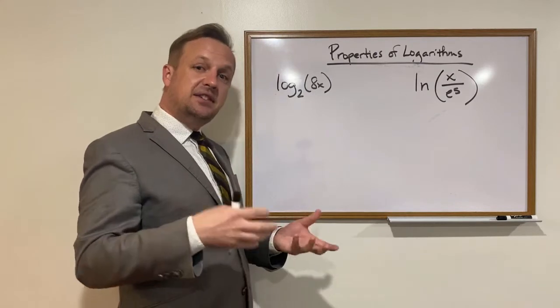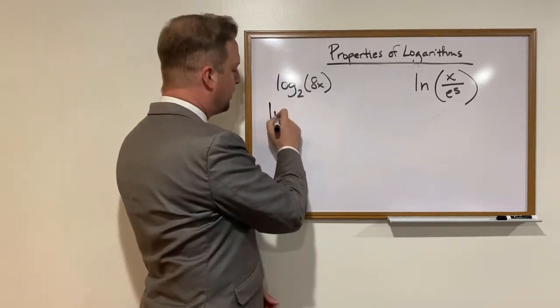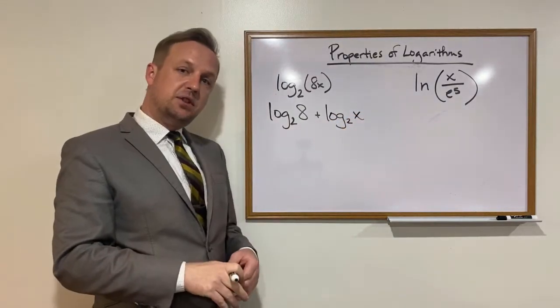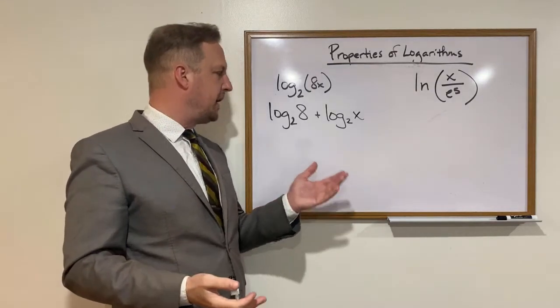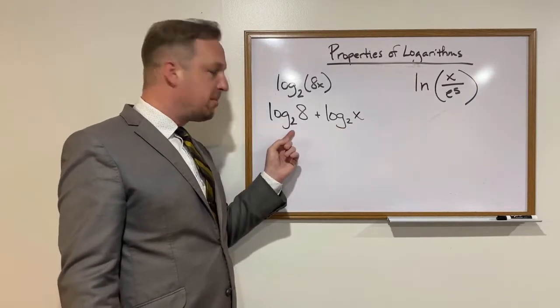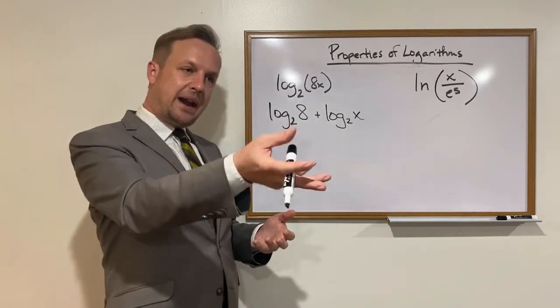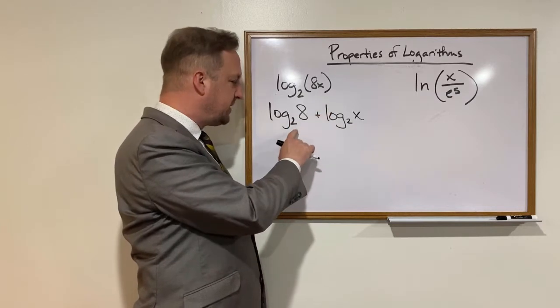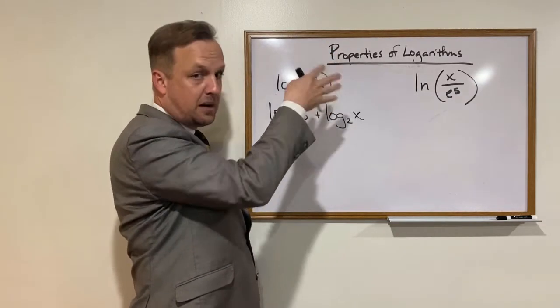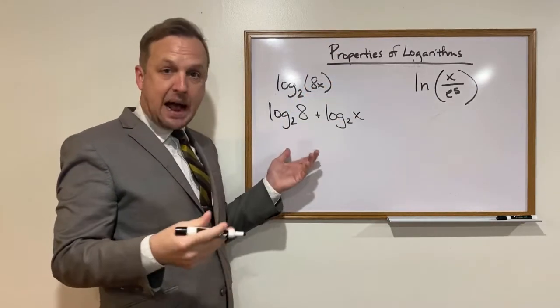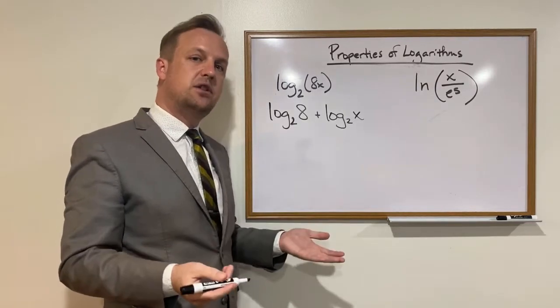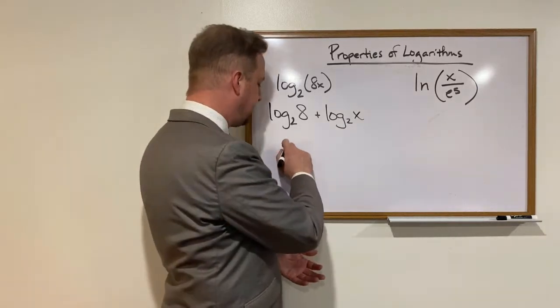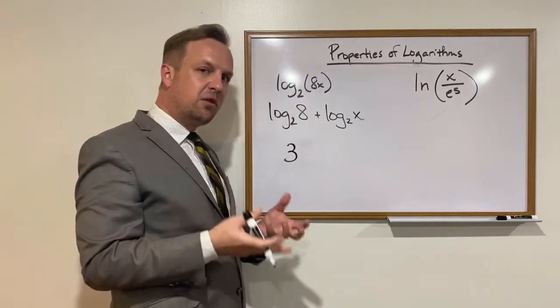So if we take a look at this first one, we've got log base 2 of 8x. And remember, that's essentially just 8 times x. So using the product rule, we can actually break that apart into log base 2 of 8 plus log base 2 of x. Remember, we can't really do anything with this because of this variable. But if you remember what a logarithm really means, a base raised to a power equals a value, then we can work with this. So the log base 2 of 8 basically means that this base of 2 raised to some power equals 8. So 2 raised to some power equals 8. It shouldn't take us too long to think about this. That's equal to 3.